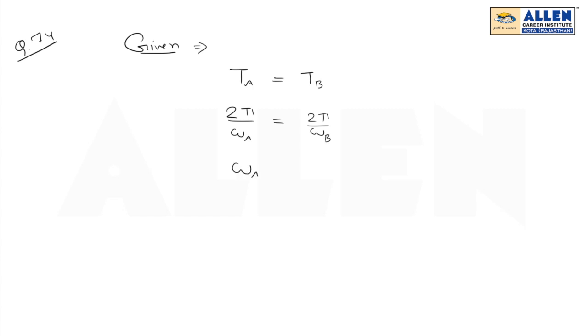Now we have to find the ratio ωA/ωB, which equals 1:1. So the ratio of angular speed of A to that of B is 1:1, which is the right answer.